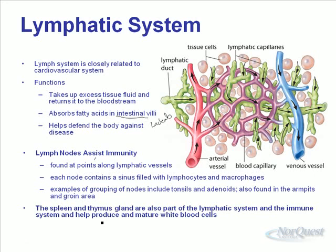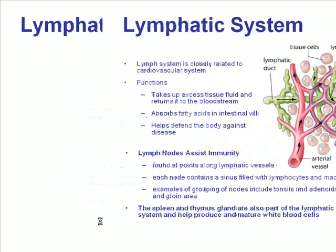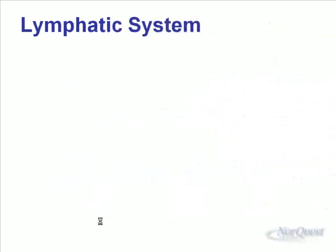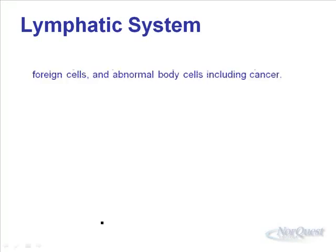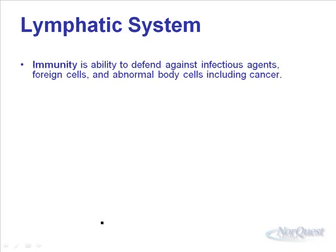The spleen and thymus are glands that are part of the lymphatic system and the immune system. They help produce and mature white blood cells. The lymphatic system's second purpose is immunity — it's able to defend against infectious agents, foreign cells, and abnormal body cells, including cancer.